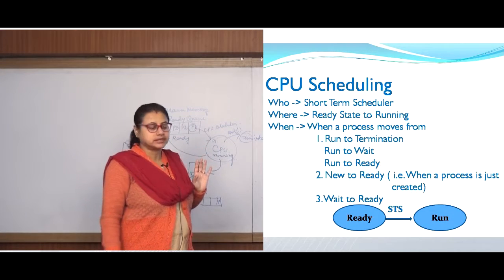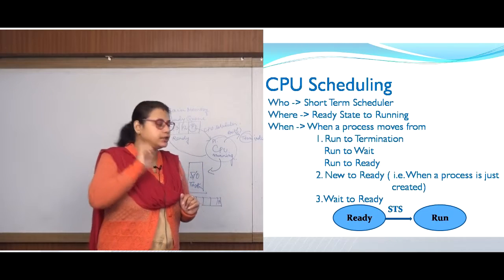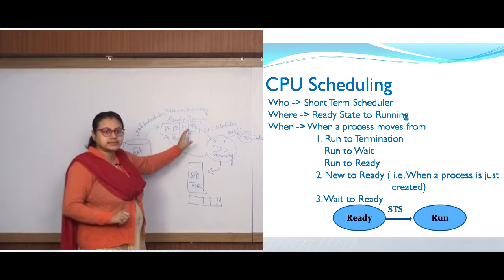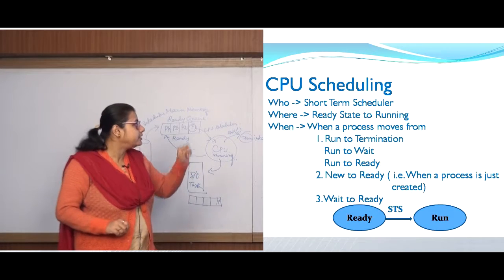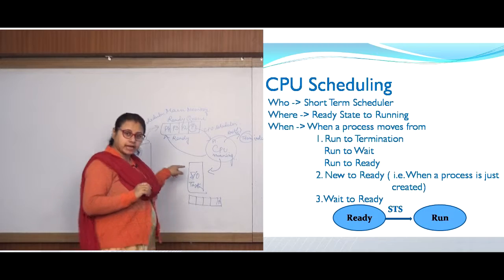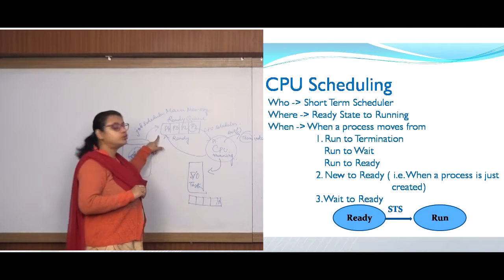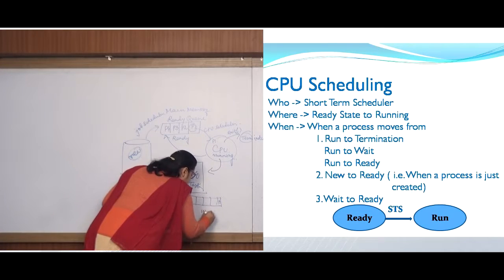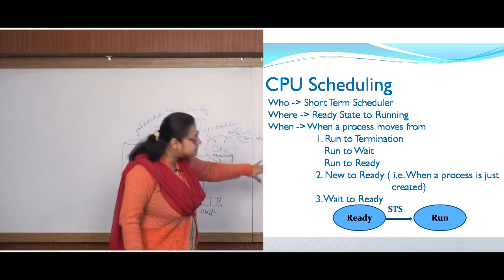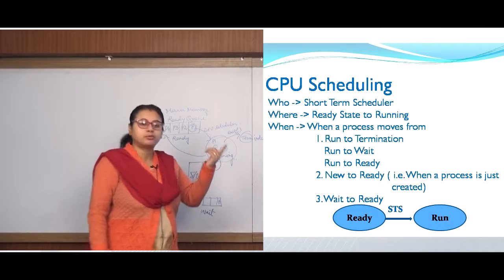So for these three reasons — from running state to termination state, from running state to waiting state, and from running state to ready state — the CPU scheduler is invoked. Additionally, from new to ready, when a process is just created and comes to the ready state, the CPU scheduler is invoked. Also from wait to ready: when a process waiting for IO completes its IO task, it goes to the ready queue again, and the CPU scheduler is invoked once more. When the process is ready, the STS makes that process the running one.